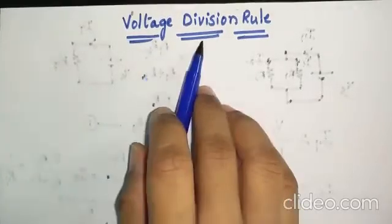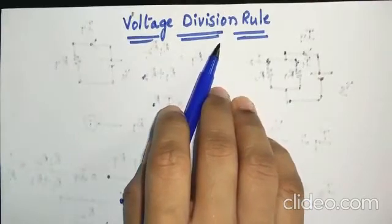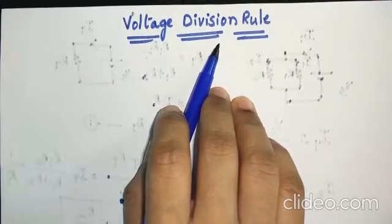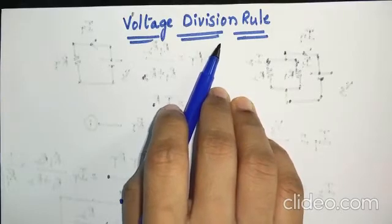Today's topic is voltage division rule. This rule is applied for series circuits, while current division rule is applied for parallel circuits.